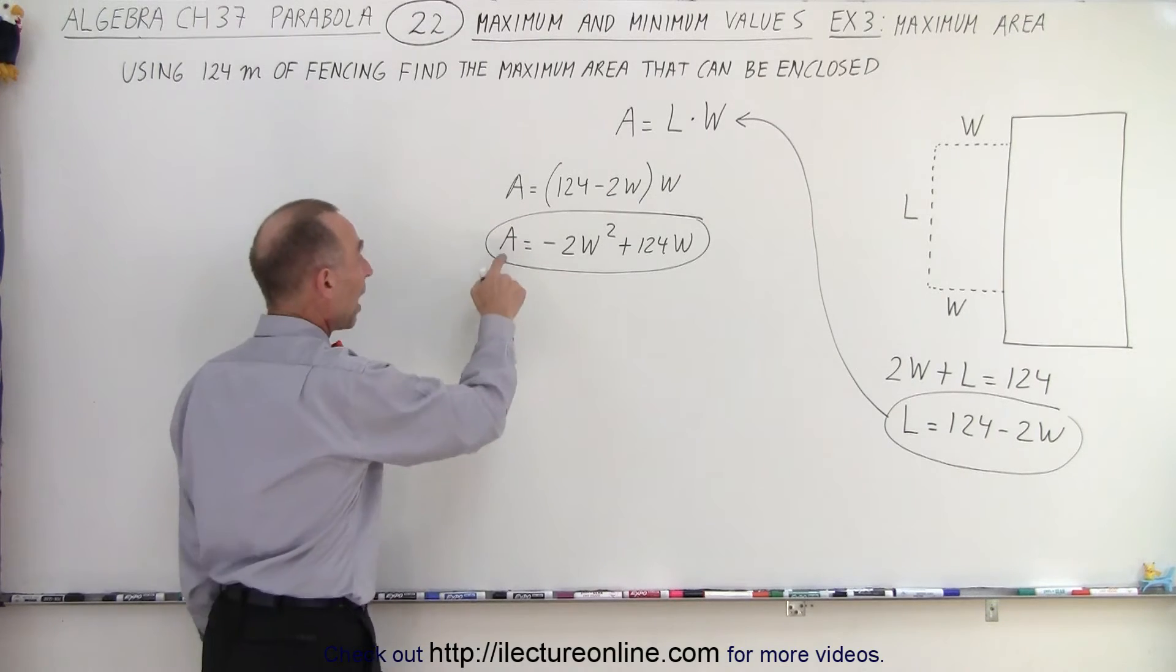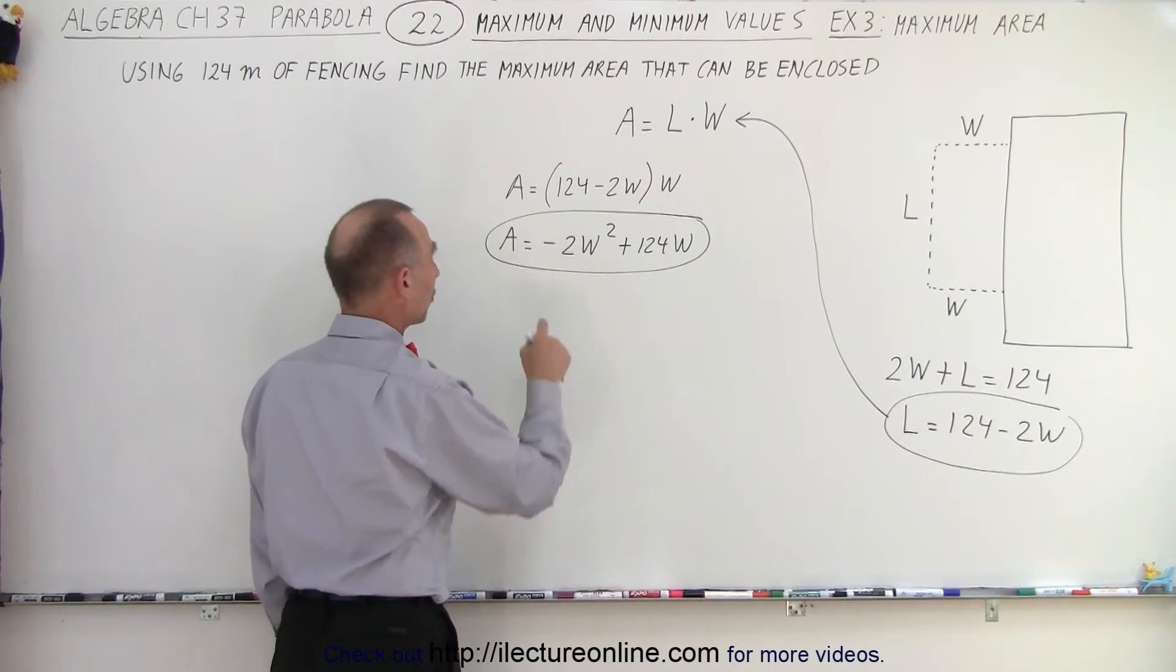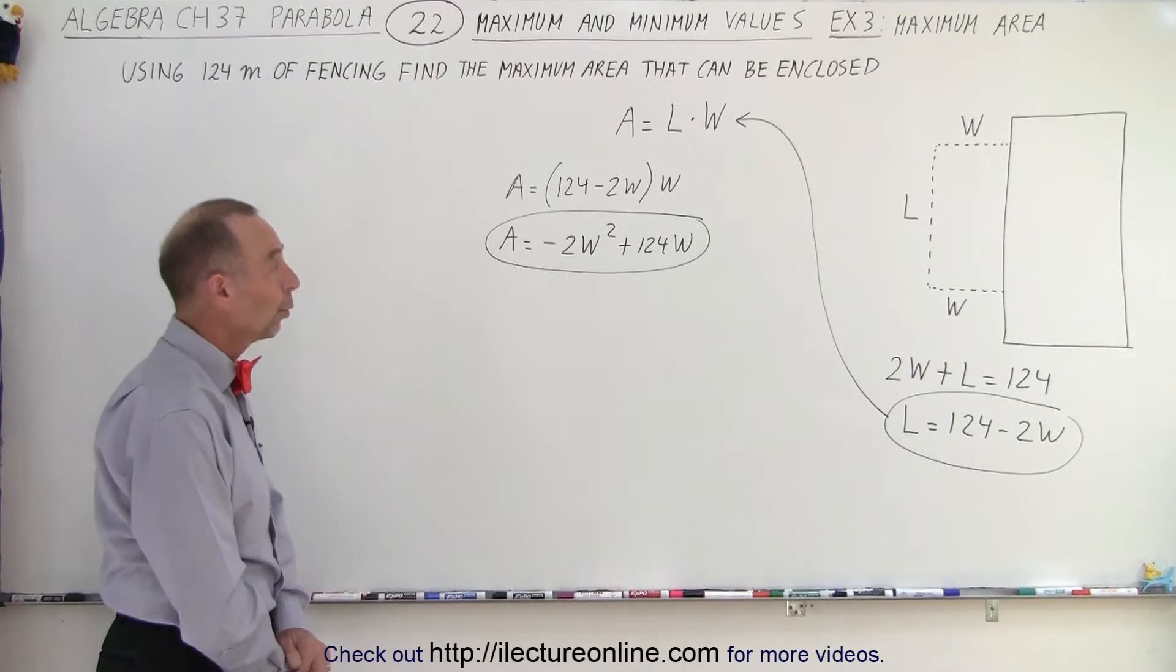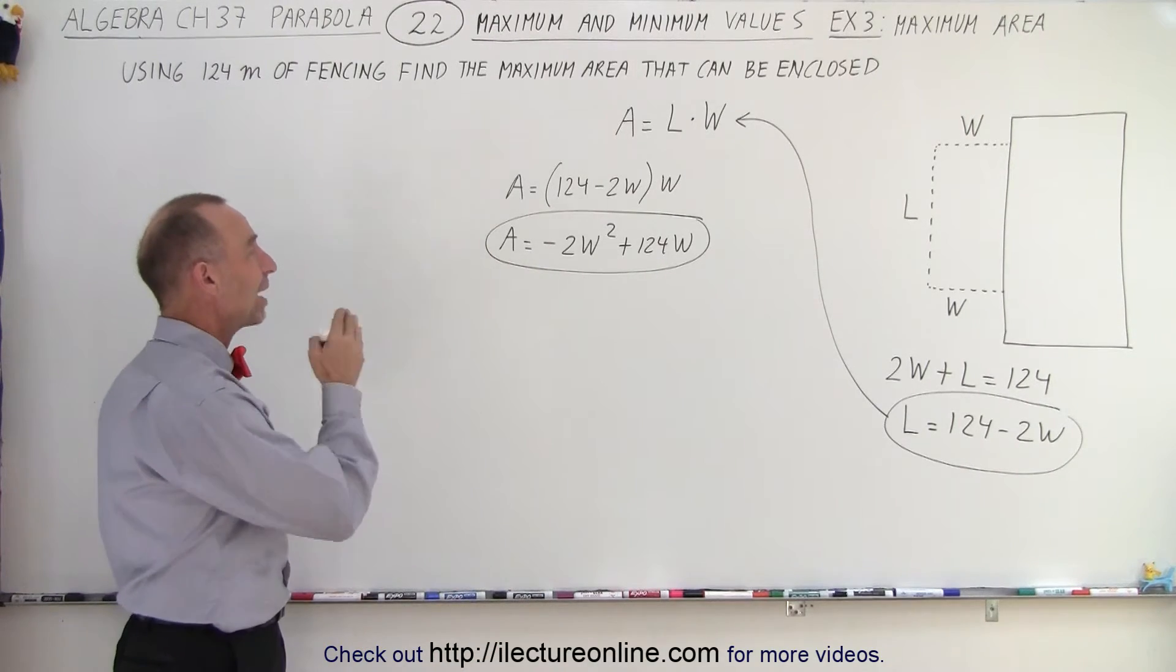And notice that looks a lot like an equation where we have y as a function of x. Instead of y, we have A. Instead of x, we have the width. So what should the width be so we have the maximum area?